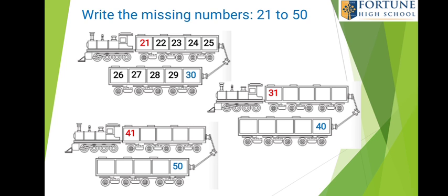Now the second train is waiting for us to write the missing numbers. The first number is 31. What comes after 31? 32, 33, 34, 35, 36, 37, 38.